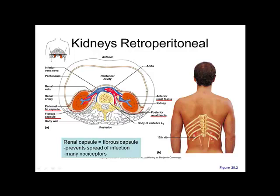Our kidneys are considered retroperitoneal. Our abdominal organs, as discussed in the GI chapter, are inside the peritoneal cavity. Our kidneys are behind the peritoneum — 'retro' means backwards or behind.